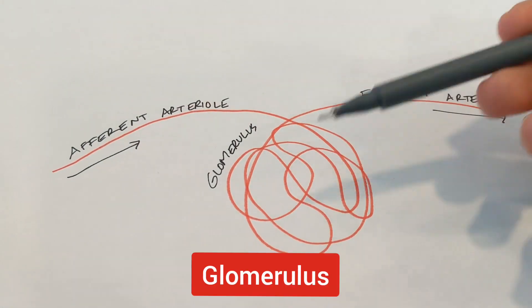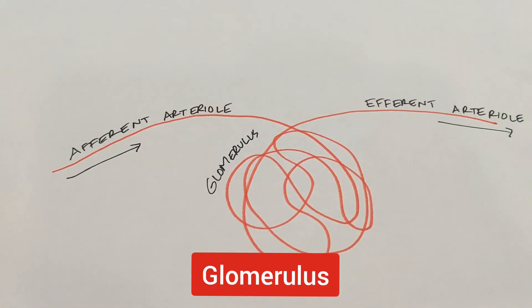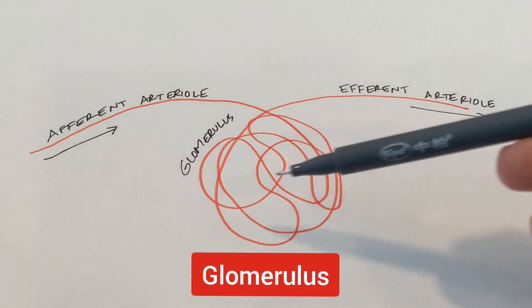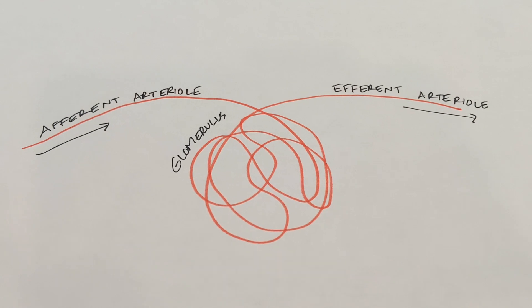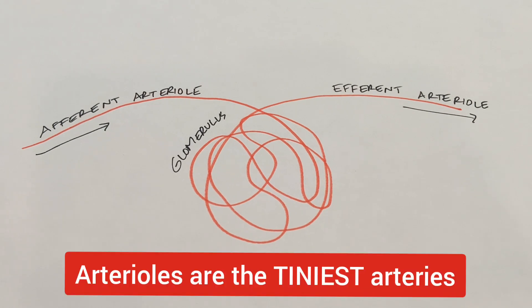This is the glomerulus. It's a tangle of blood vessels, specifically arterioles, and they have very thin walls so that materials can diffuse through them.